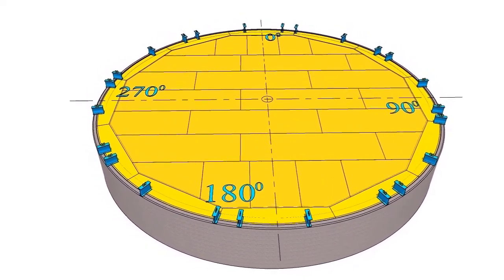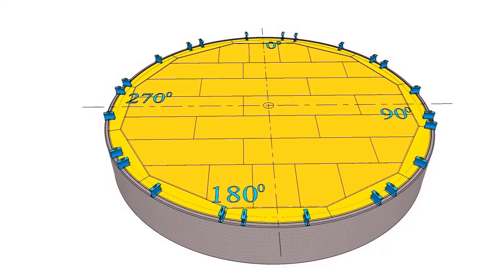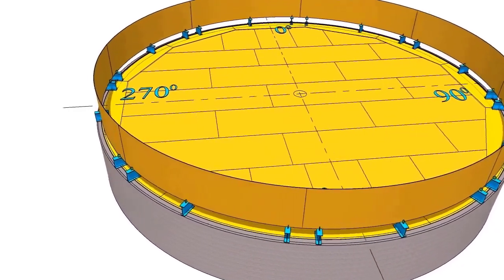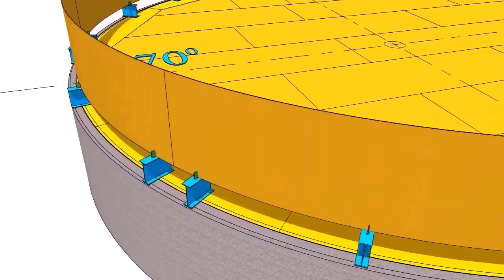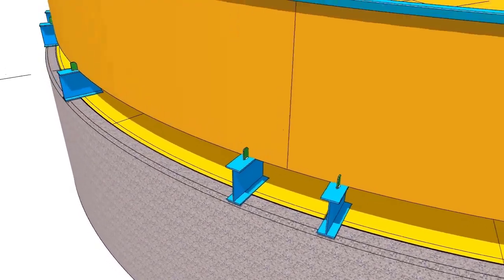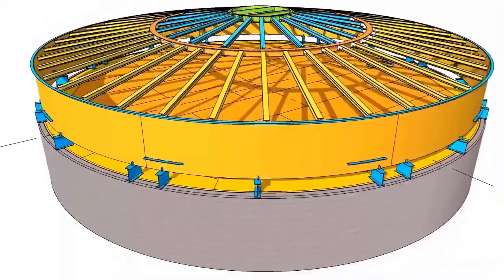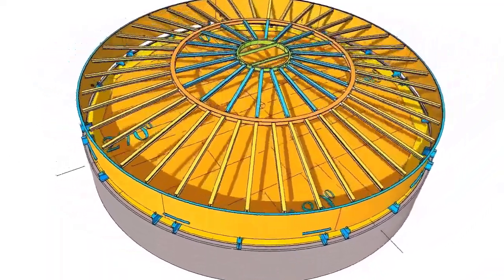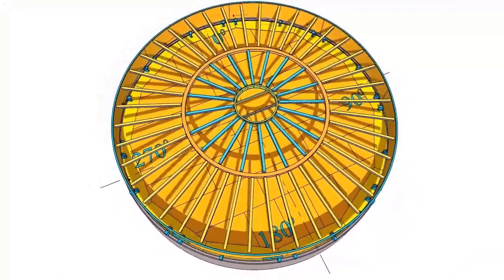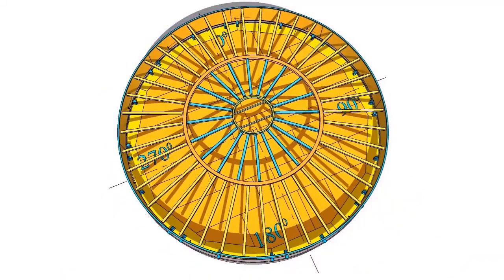Erect top shell course on the chairs placed on the annular plate, taking care to match inner diameter. Install the curb angle. Install the roof structure. Install the lifting system in the same method used in the jacking system.